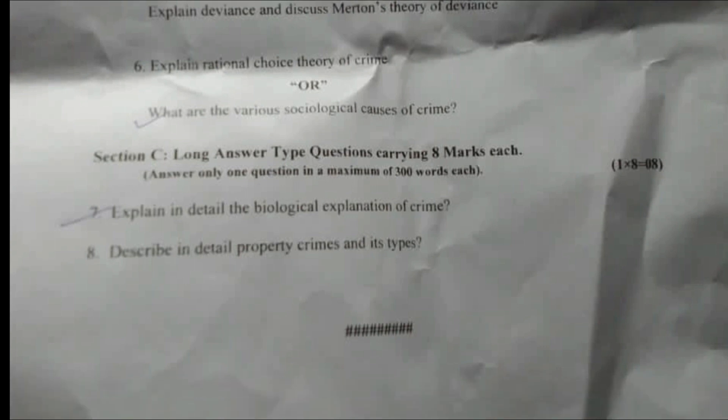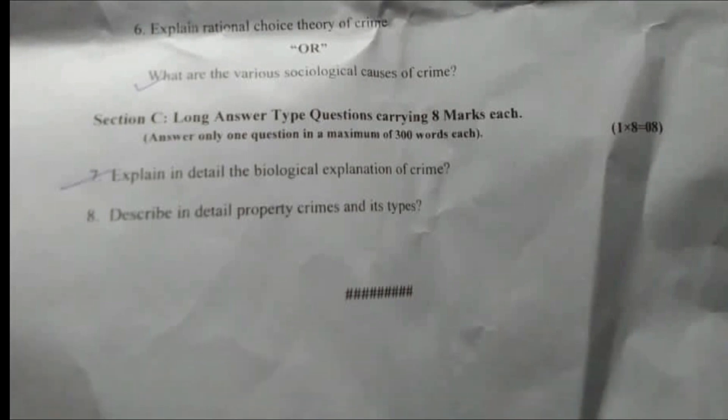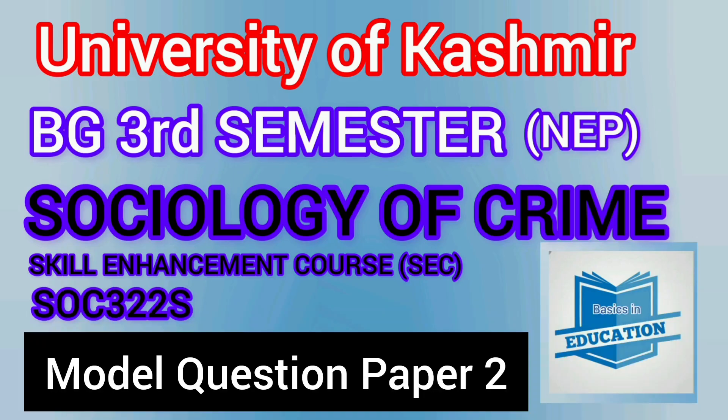Section C: long answer type questions carrying 8 marks each; answer only one question in a maximum of 300 words each; 1 into 8 is equal to 8 marks. Question number 7: Explain in detail the biological explanation of crime. Question number 8: Describe in detail property crimes and its types.